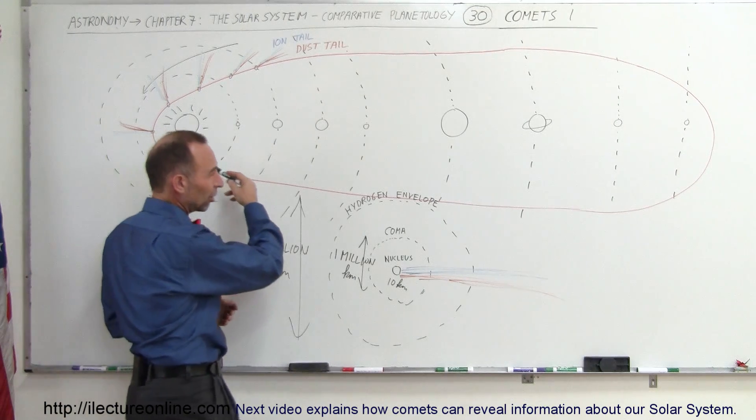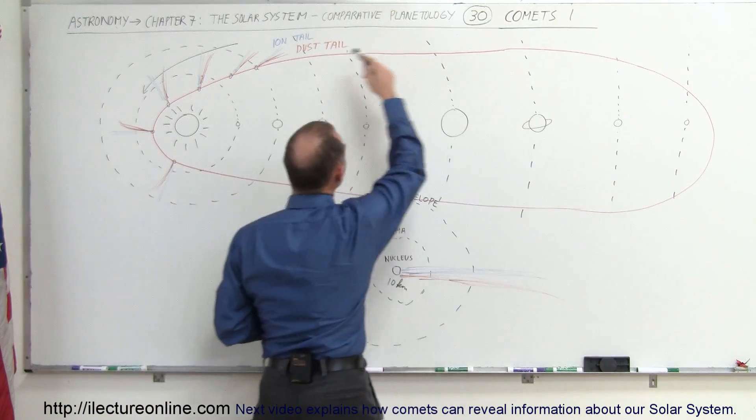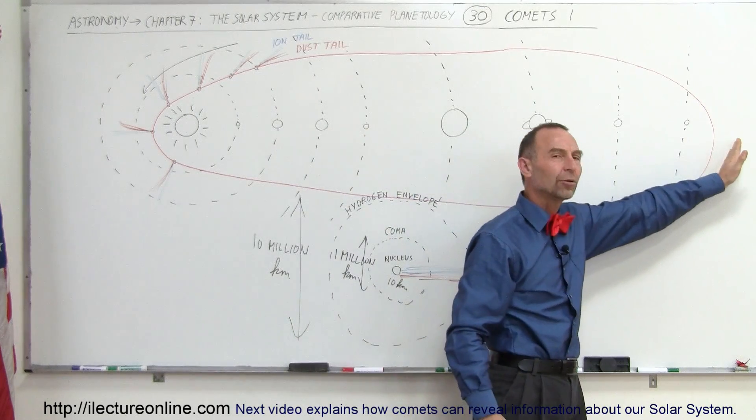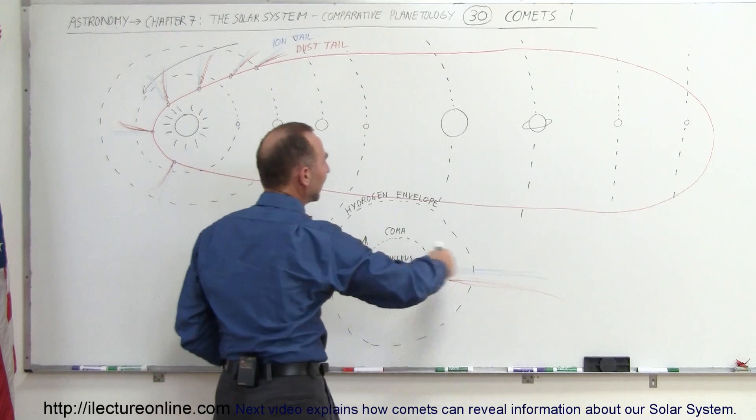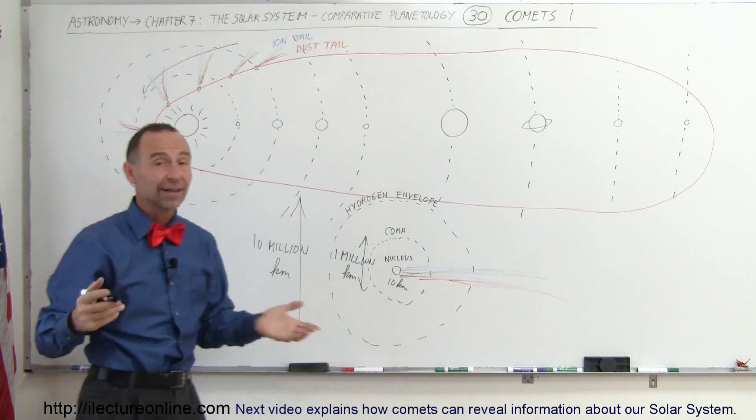Halley has an orbit at the far reaches. The orbit goes out about to the distance where Pluto is, and it comes all the way back in, and it takes a trip around the Sun about every 76 years.